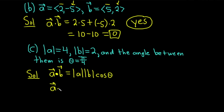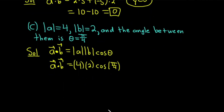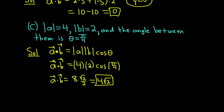So A dot B equals 4 times 2 times the cosine of pi over 4. That gives us 8 times the cosine of pi over 4. The cosine of pi over 4 is the square root of 2 over 2, so 2 goes into 8 four times, and we end up with 4 root 2. Whenever you're given the magnitudes and an angle, you can use the formula A dot B equals the magnitude of A times the magnitude of B times cosine of theta to find the dot product.